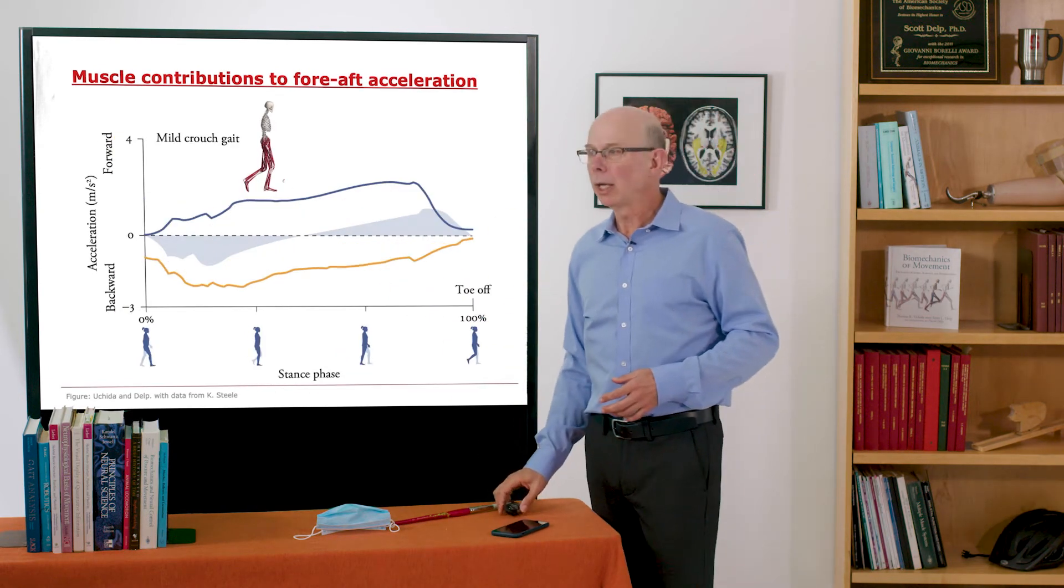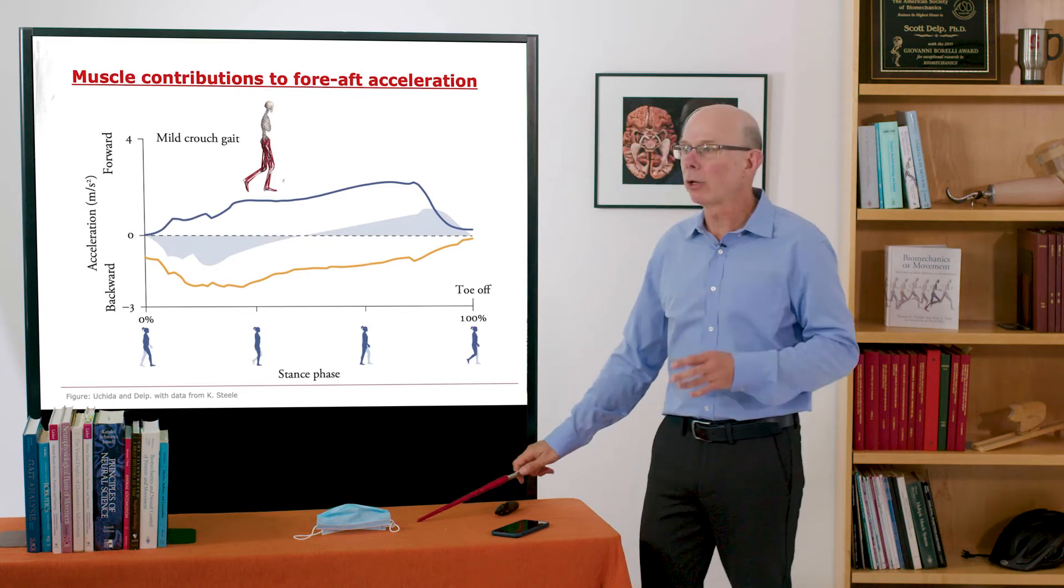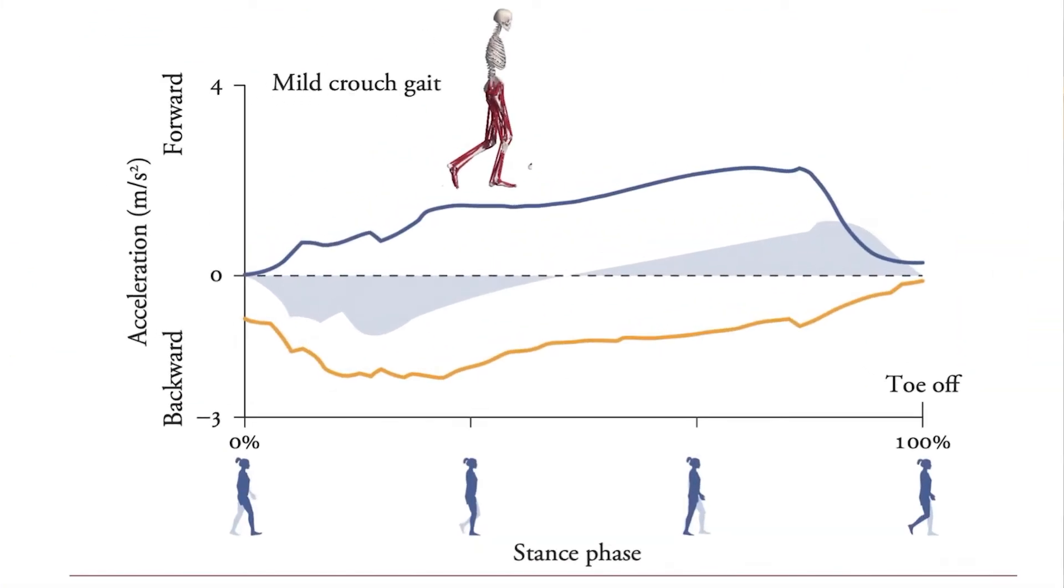That's not the case in crouch gait. Even with a mild crouch gait, what you see is that the muscles are on the entire time. So gastrocnemius is on early, it's producing a forward acceleration, and the vasti stay on during the entire stance phase.